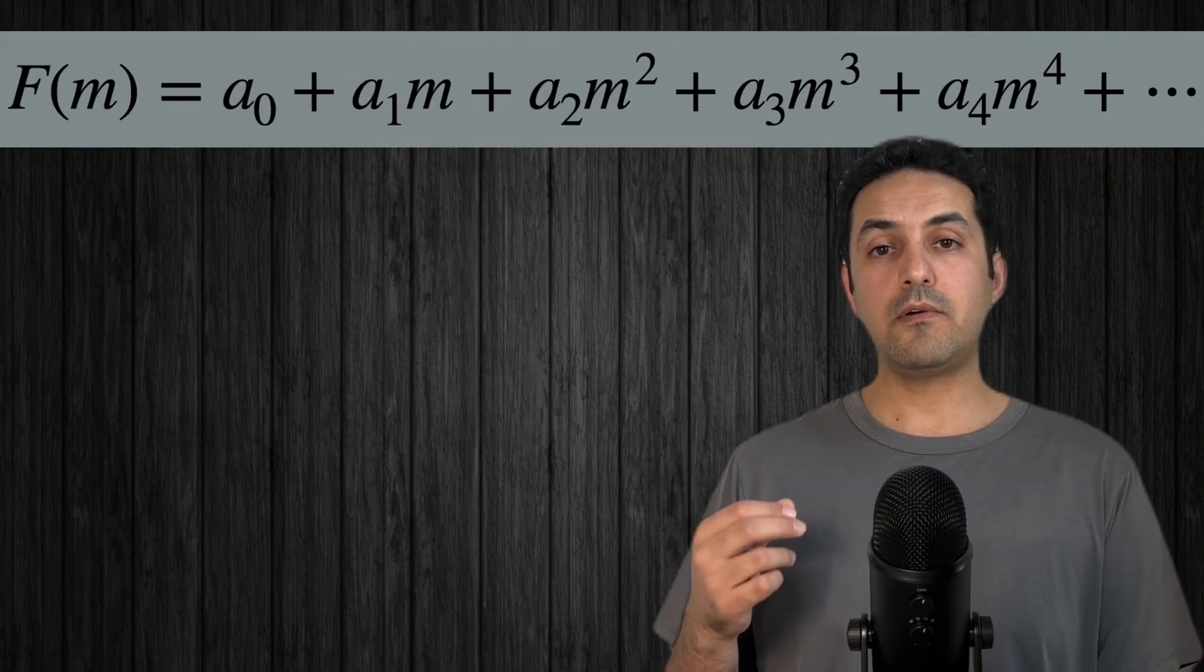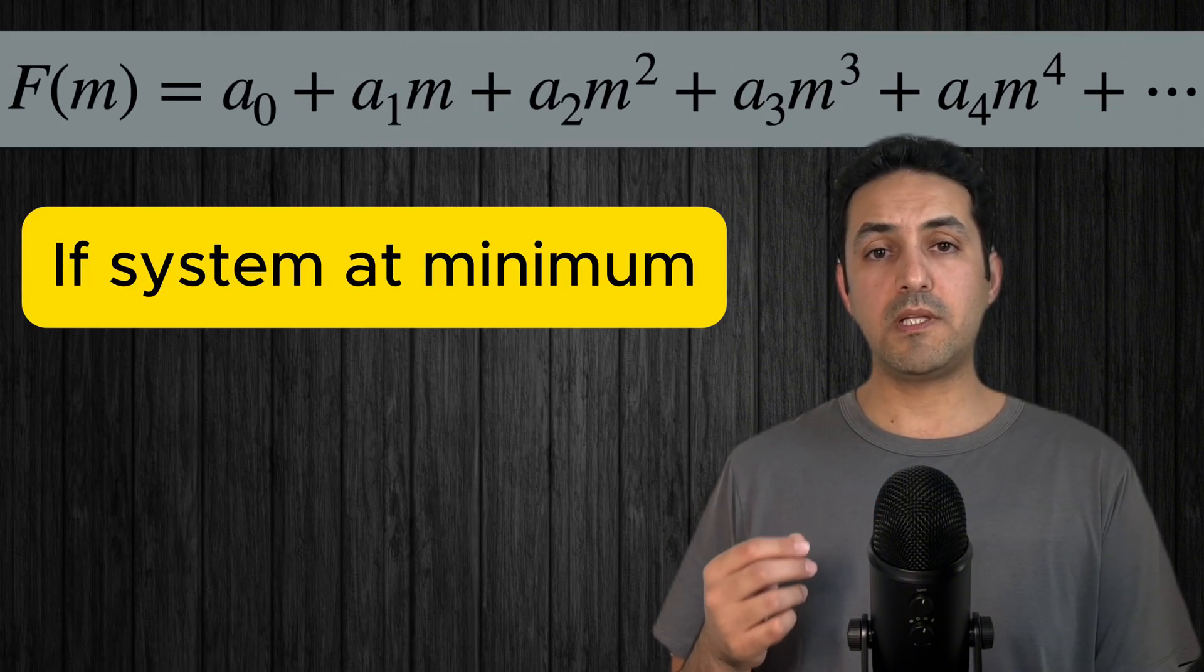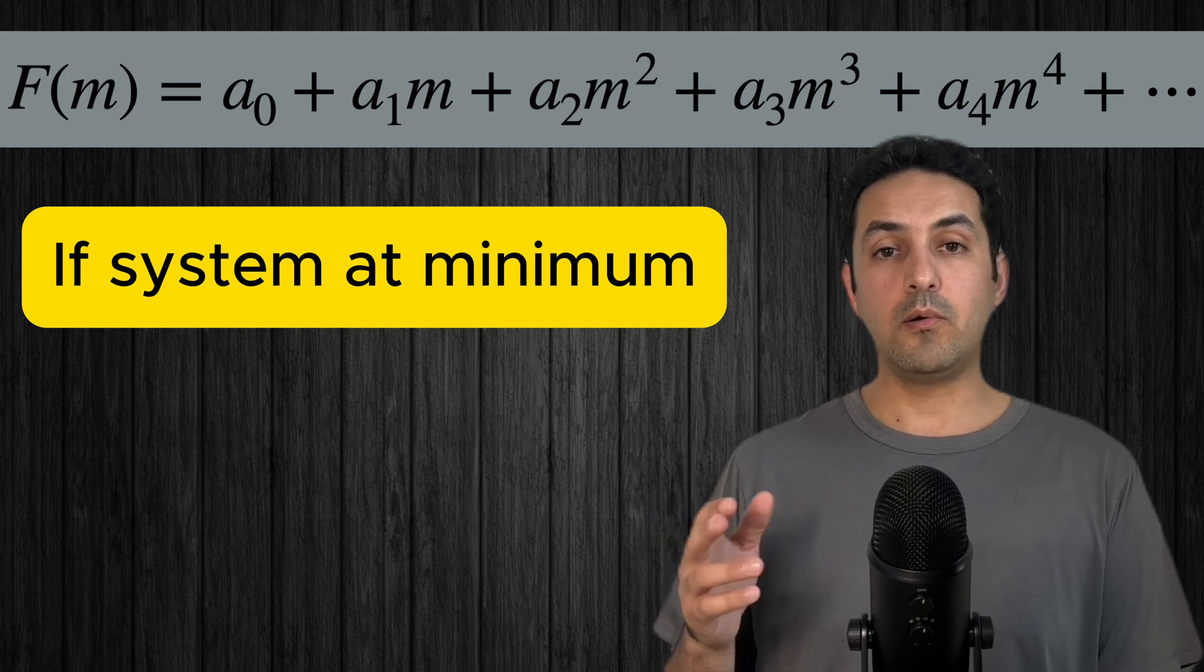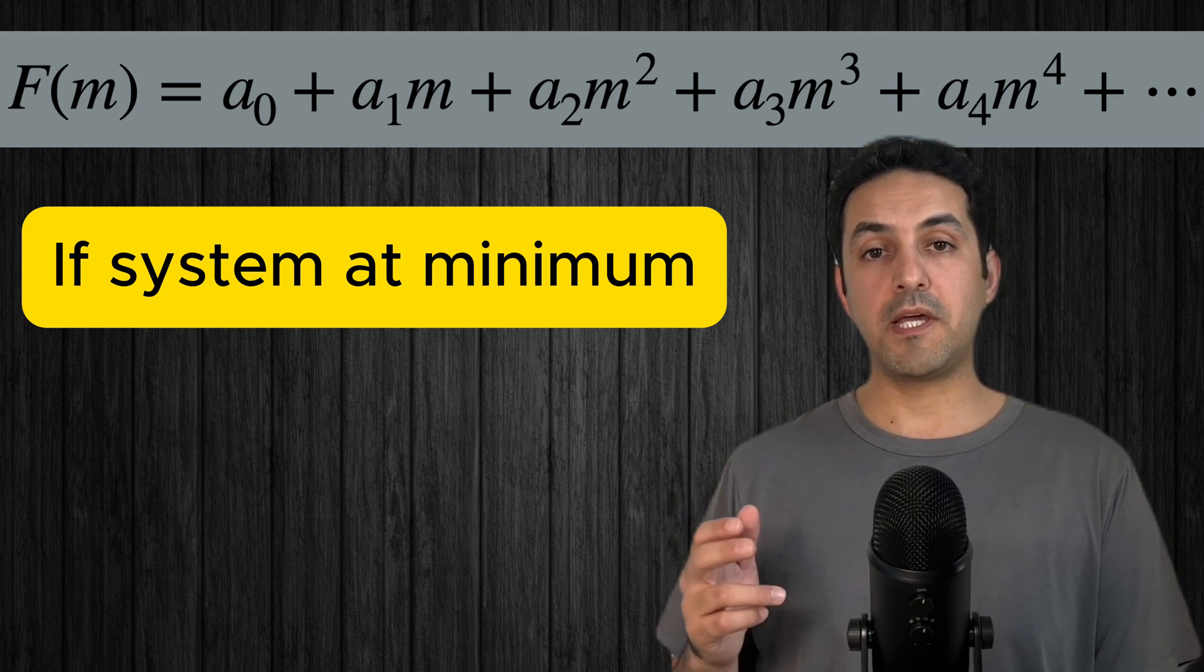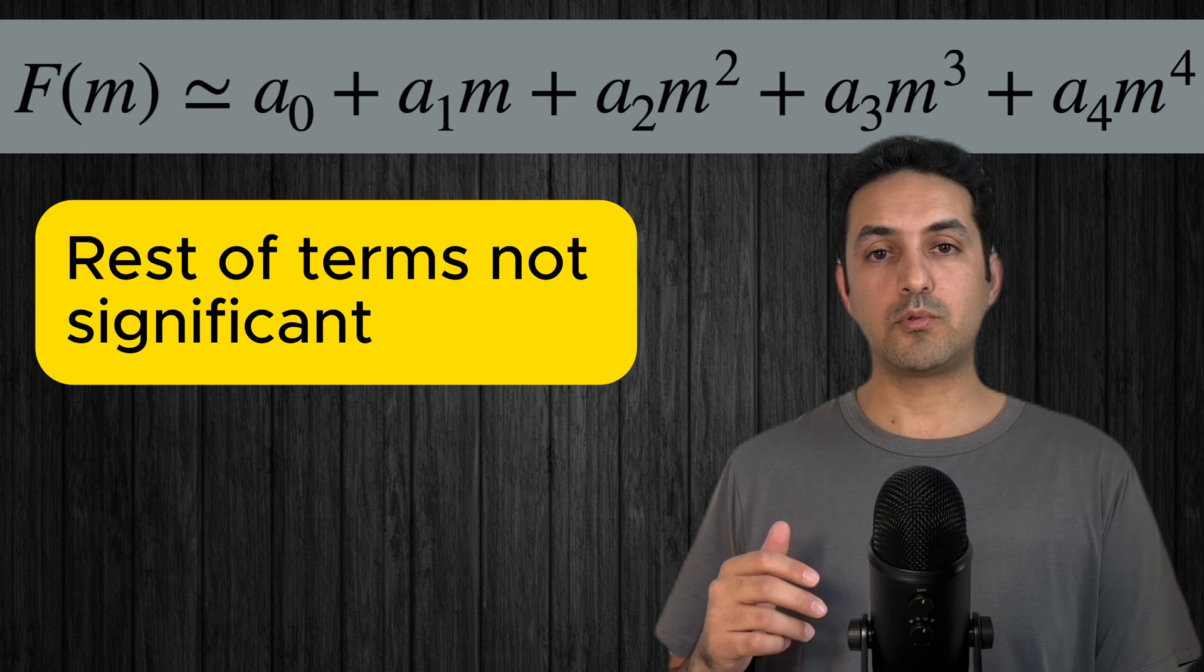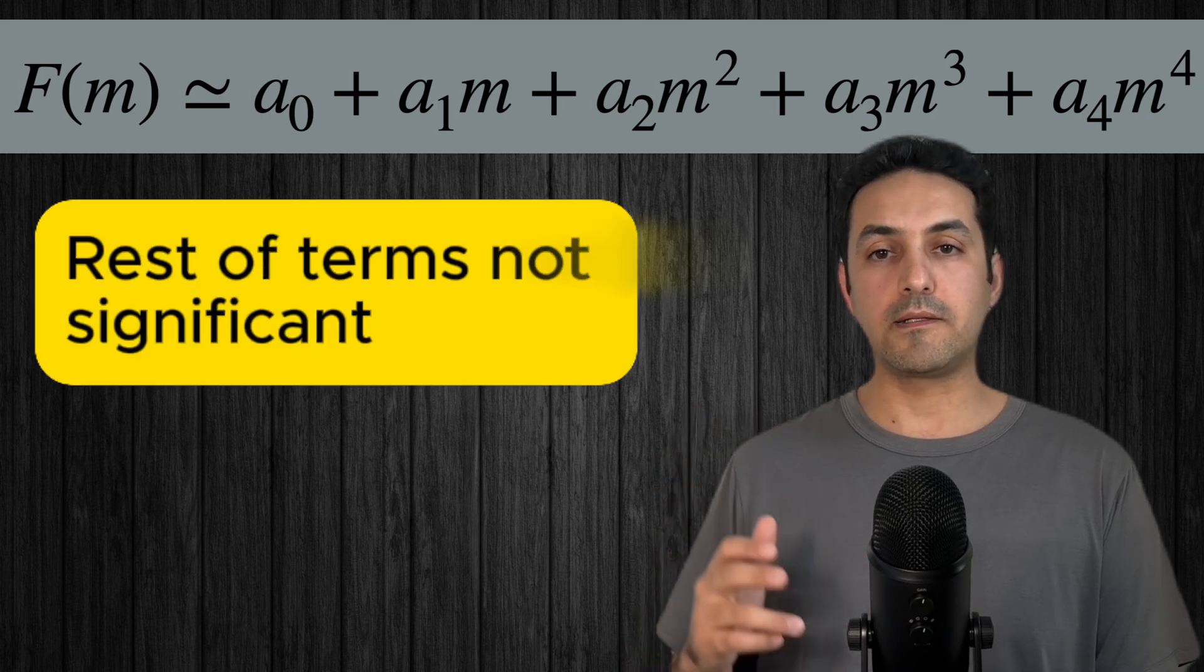To answer that, I will write F in the form of a Taylor series. Assuming that the system is at the minimum, the lower order terms are more significant than the higher order terms. So I will keep up to the fourth order and neglect the rest.